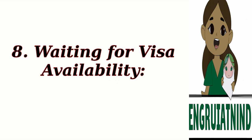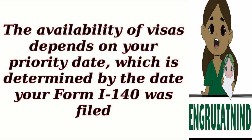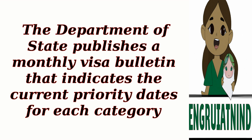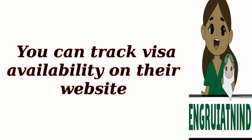8. Waiting for Visa Availability. The availability of visas depends on your priority date, which is determined by the date your Form I-140 was filed. The Department of State publishes a monthly visa bulletin that indicates the current priority dates for each category. You can track visa availability on their website.